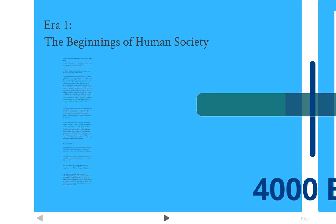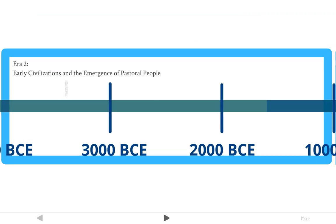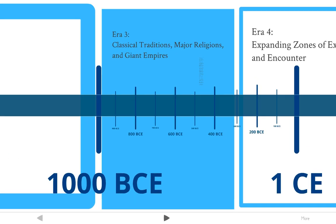The first era we'll be studying is the beginnings of human society — everything before 4000 BCE — so how humans got started and what started them. The second era covers early civilizations and the emergence of pastoral people, between 4000 BCE and 1000 BCE, looking at how those early civilizations got started.